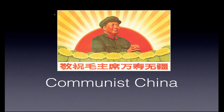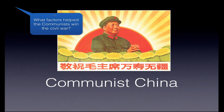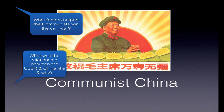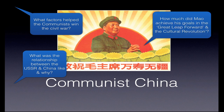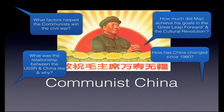As you go through the video, make notes, and here are some focus questions to help you structure your notes. The first one: what factors helped the communists to win the Chinese Civil War? A second focus question: what was the relationship between the USSR and China like, and why? What was the relationship like between these two major communist powers? How much did Mao achieve his goals in the so-called Great Leap Forward and the Cultural Revolution? And last of all, how has China changed and in some ways remained the same since 1980?